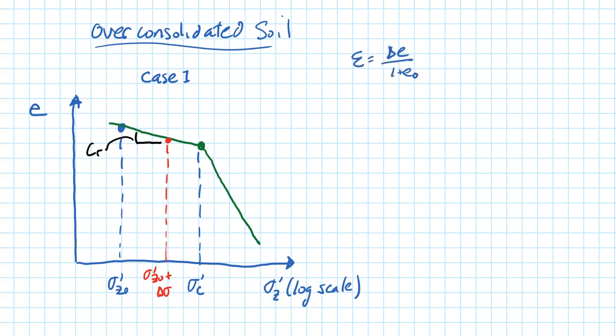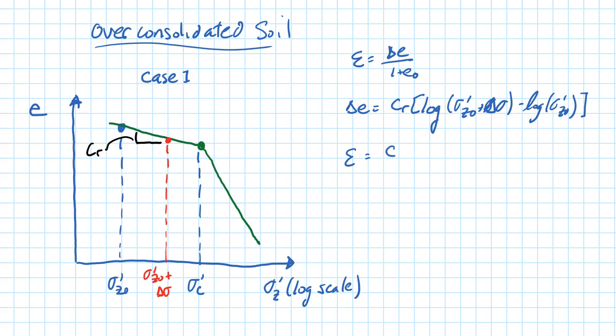For Case 1, the strain is the change in void ratio over 1 plus the initial void ratio. The change in void ratio is C sub R times the log of the final stress (sigma-prime-C0 plus delta-sigma) minus the log of the initial vertical effective stress. So the strain is C sub R over (1 + E0) times the log of the final stress divided by the initial vertical effective stress. Settlement is then found by multiplying that strain by the clay layer thickness H.